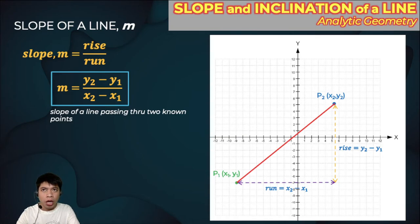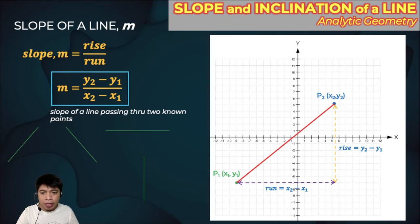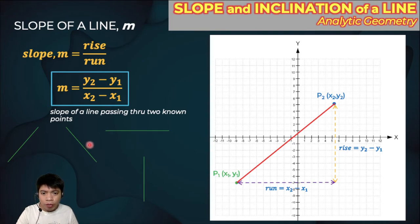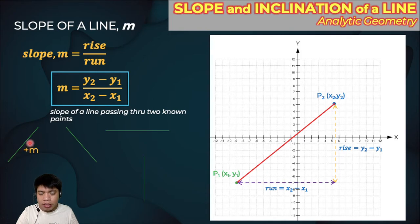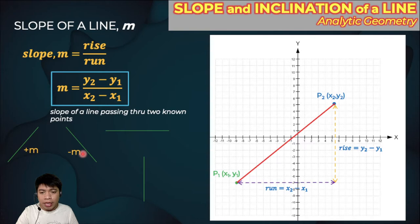I want to give you a technique so that you already know the sign of the slope. The slope may be positive or negative. If the line is leaning rightward, the slope is always positive. And if the line is leaning leftward, the slope is always negative.